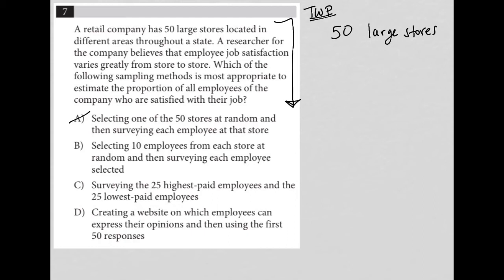Choice C: surveying the 25 highest paid employees and the 25 lowest paid employees. It does sound like we're looking at all 50 stores from that option, but the 25 highest paid employees are probably a little different than the 25 lowest paid, and we don't know how many employees are in the middle. We don't really know how many employees work at each store. Selecting 10 employees at random — which means you might get some from the top, middle, and bottom in terms of pay — is better than pre-selecting the groups you're going to ask. So choice C is not better than B.